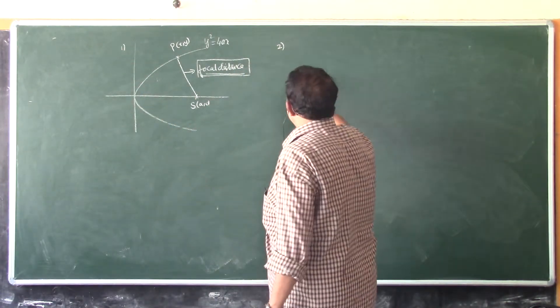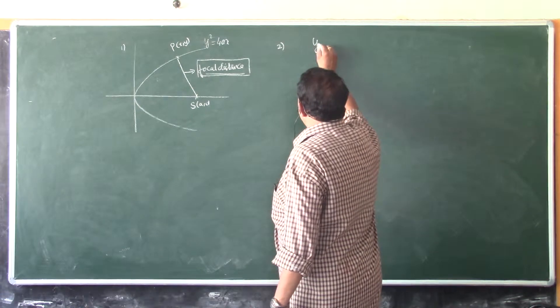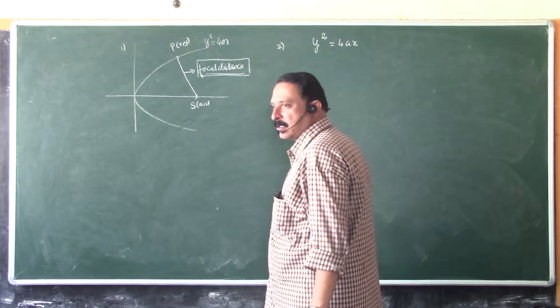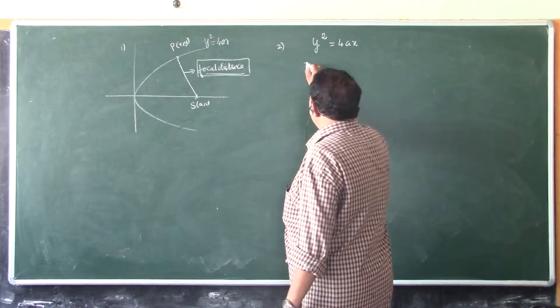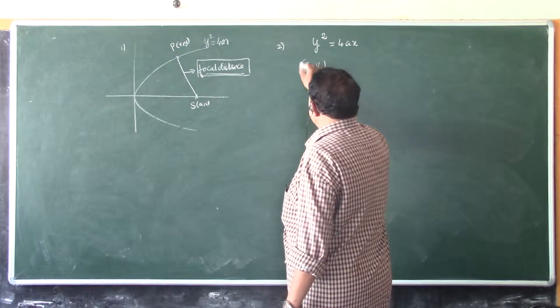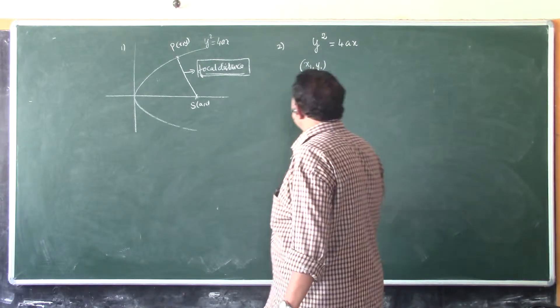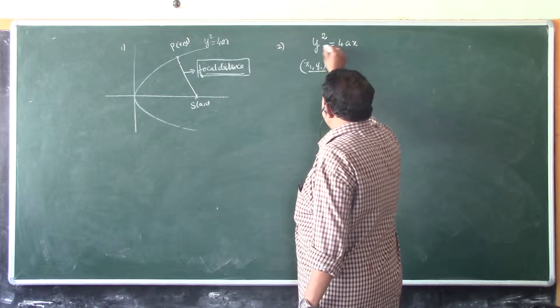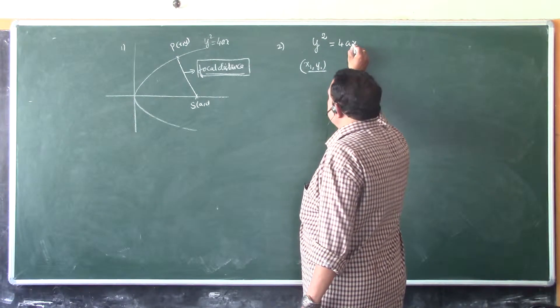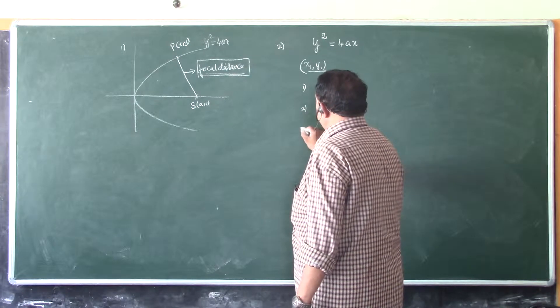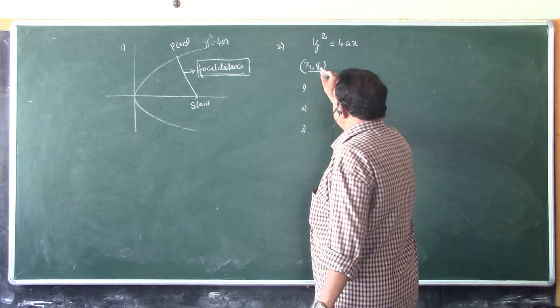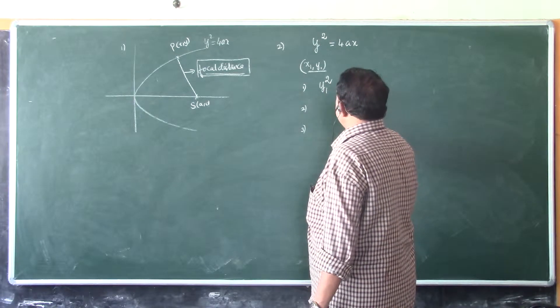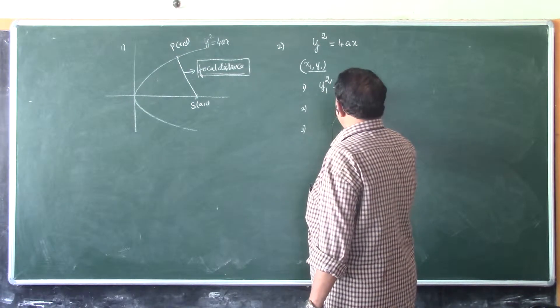Point number two is: let's consider the parabola y² equals 4Ax. Now consider any point, say x1, y1. Now substitute the values of this point in the equation of the parabola. We have now three different cases. Now in place of y, I substitute y1. y1 square minus 4Ax1.